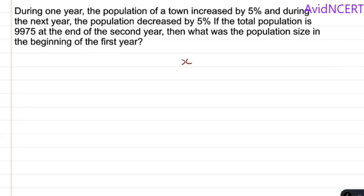Let the population at the beginning be X. So in the first year, the population increased by 5% which means out of this X, the population increased by 5% which is 100 plus 5 which is 105%.